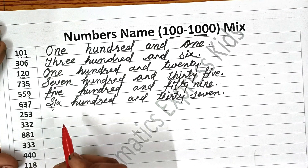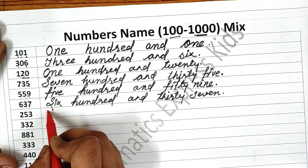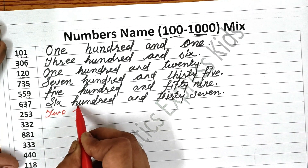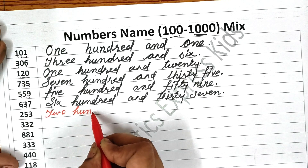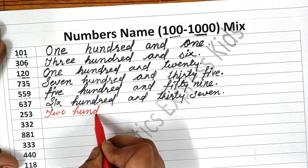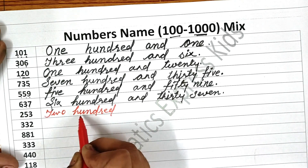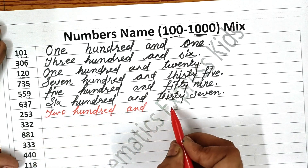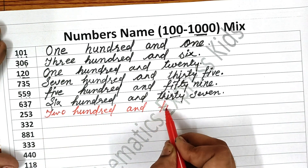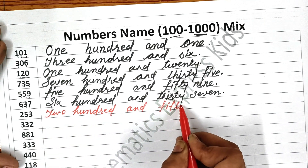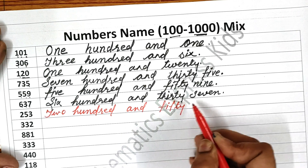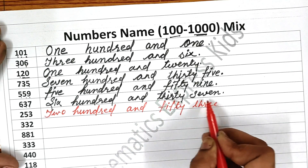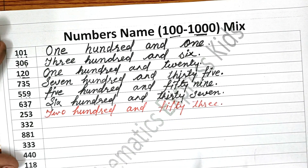Now the next one is two hundred and fifty-three. First write two — T-W-O — two hundred — H-U-N-D-R-E-D — and fifty-three. Write fifty — F-I-F-T-Y — three — T-H-R-E-E. Fifty-three. Okay.